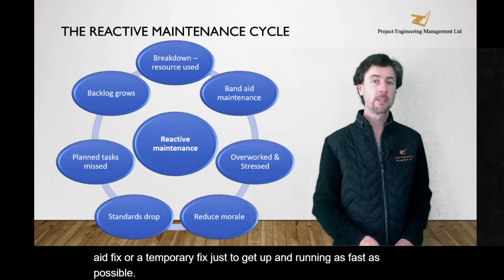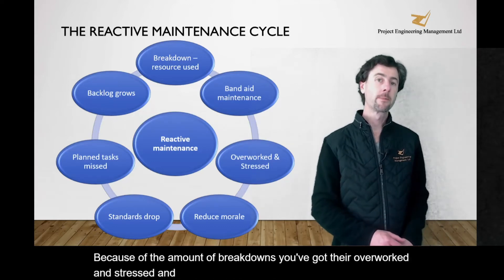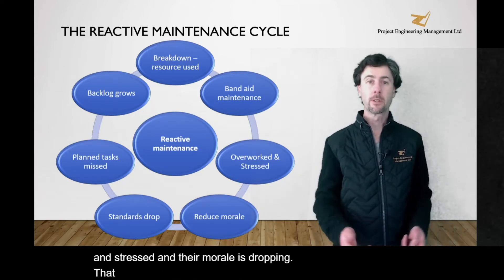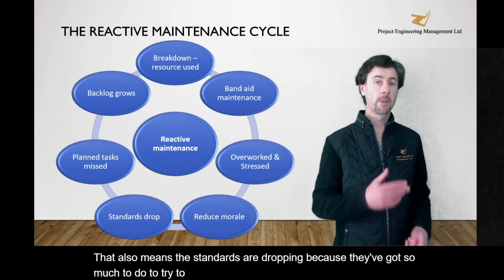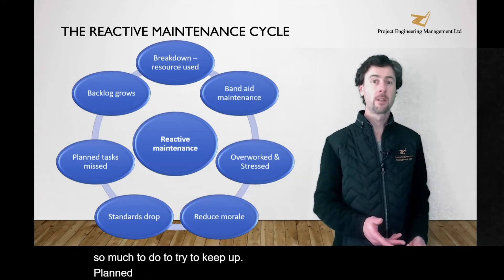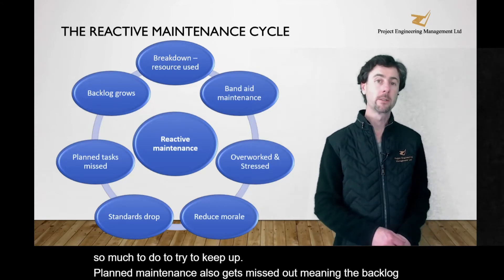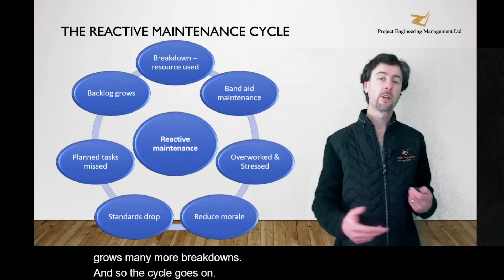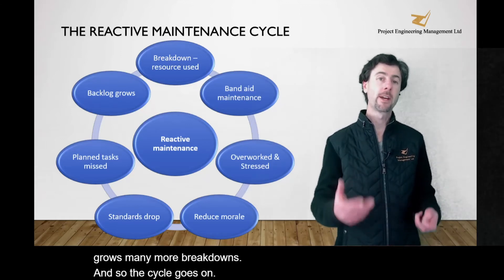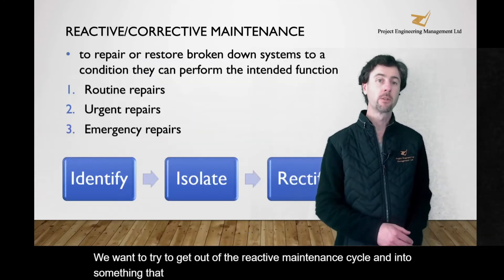Because of the amount of breakdowns, they're overworked and stressed and their morale is dropping. That also means their standards are dropping because they've got so much to do to try to keep up. Planned maintenance also gets missed out, meaning the backlog grows, meaning more breakdowns — and so the cycle goes on. We want to try to get out of the reactive maintenance cycle and into something that we can predict a little bit better.